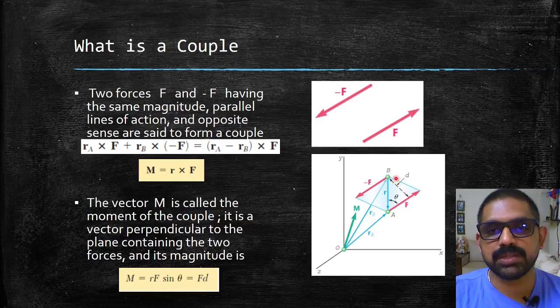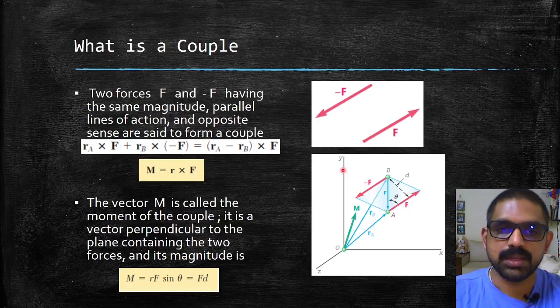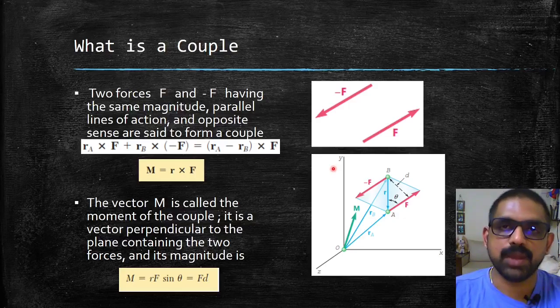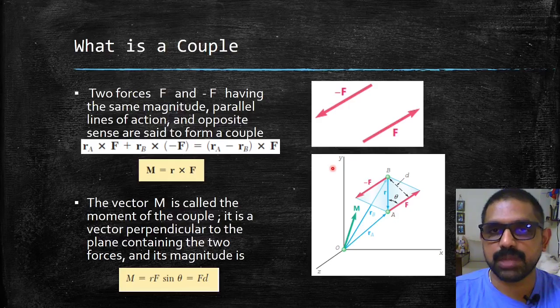In a way we can say that every couple can be attributed to a moment. So if there are equal and opposite forces acting at two different points and their lines of action are parallel to each other, then it forms a couple, and those couples produce a moment.